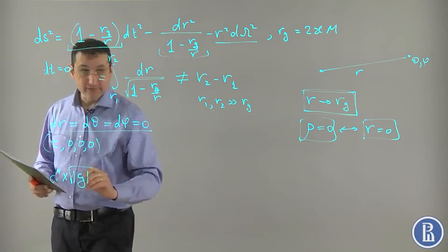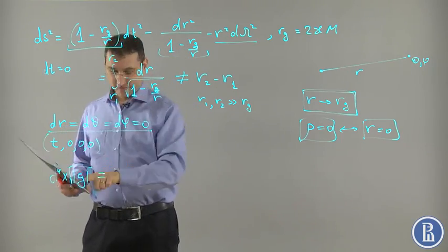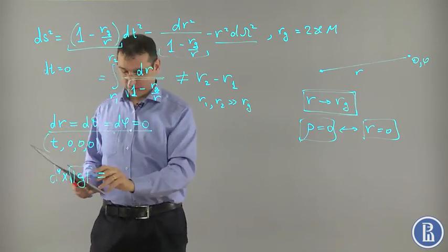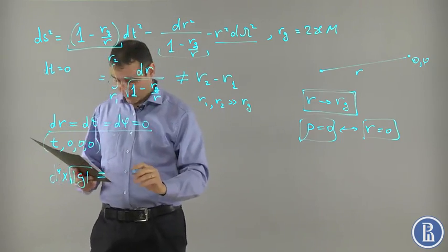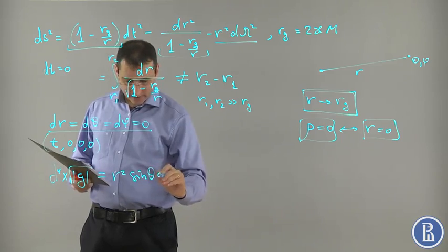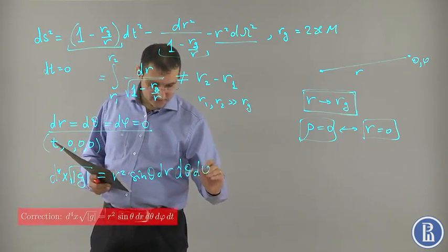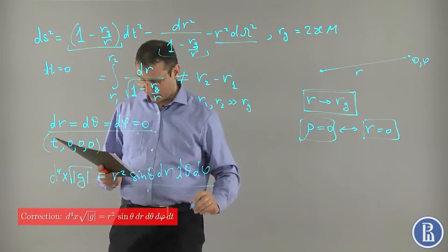The simplest invariant that one can build is the volume form. This invariant for the given metric, this factor and this factor and this invariant cancel each other. This is a determinant of this metric and it is equal to R squared sine theta dr d theta d phi. So it is regular. That's the first thing.